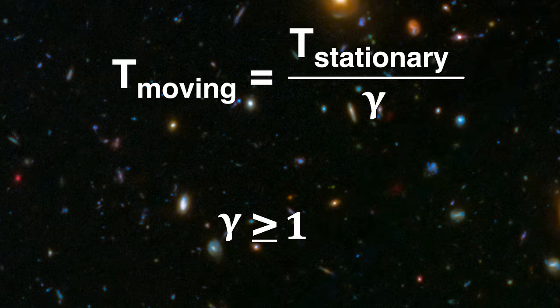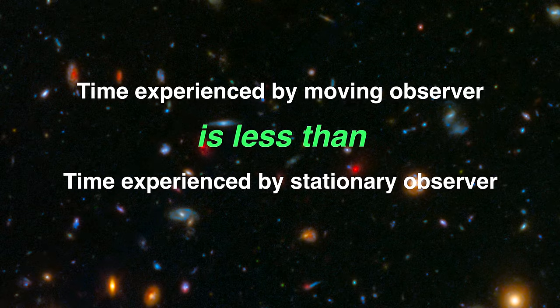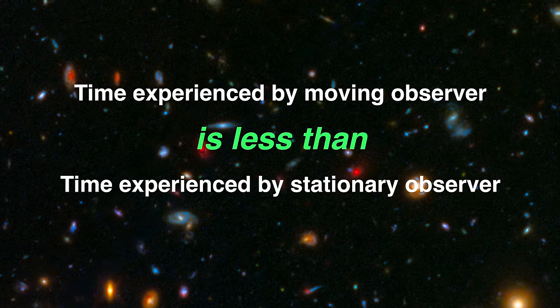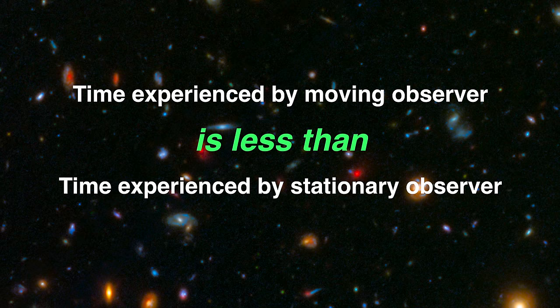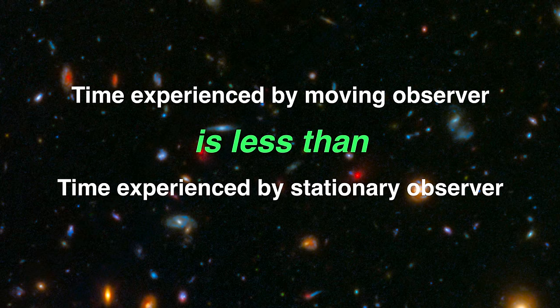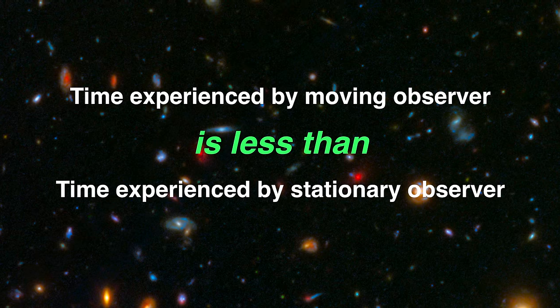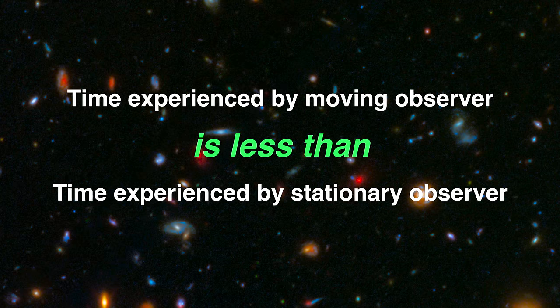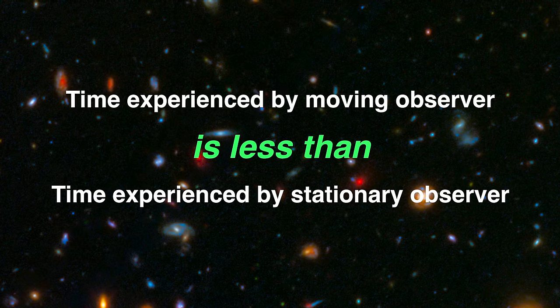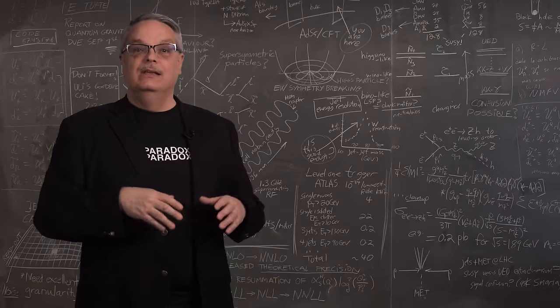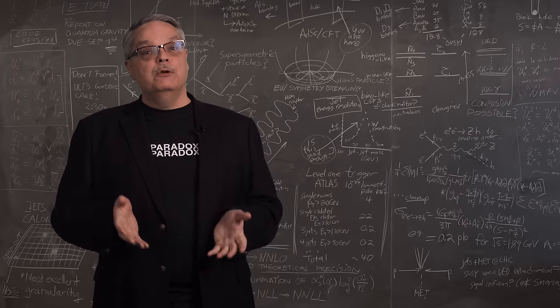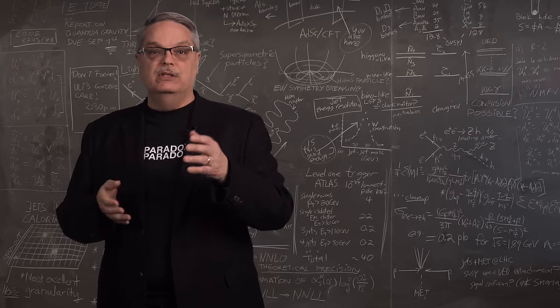Thus, we can then simply say that the time experienced by B and C as they travel, call this moving trip time, is equal to the stationary trip time divided by Gamma. And since Gamma is greater than or equal to 1, that means that the moving trip time is shorter than the stationary trip time. So that's the bottom line. Moving people really do experience a shorter amount of time than the stationary one.